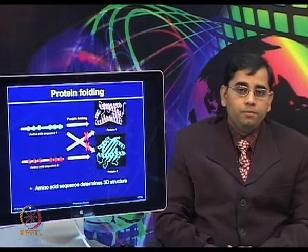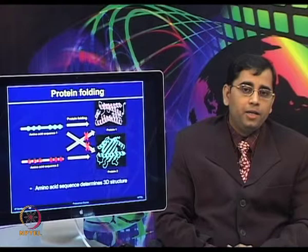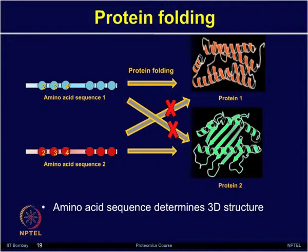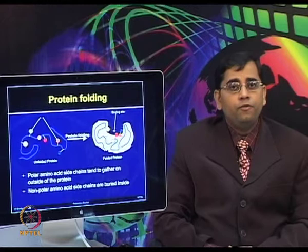Proteins have very high specificity: if you have amino acid sequence 1 shown in blue, that will form protein 1. If you have amino acid sequence 2 shown in red, that will form protein 2. Amino acid sequence 1 cannot generate protein 2, and similarly amino acid sequence 2 cannot generate protein 1. There is very high specificity of amino acid sequence which determines the three-dimensional structure of proteins.